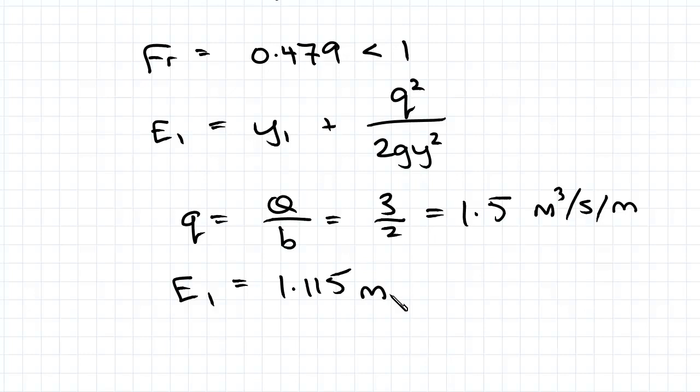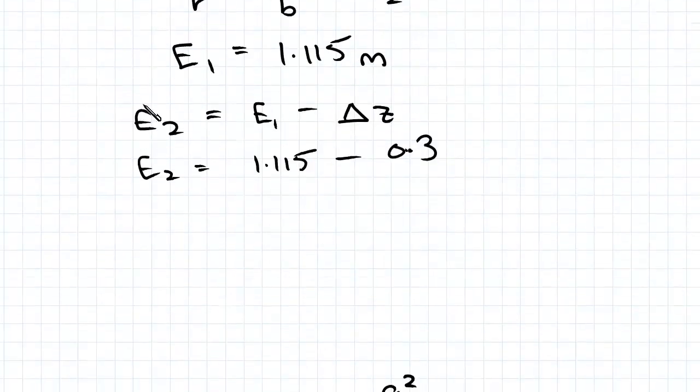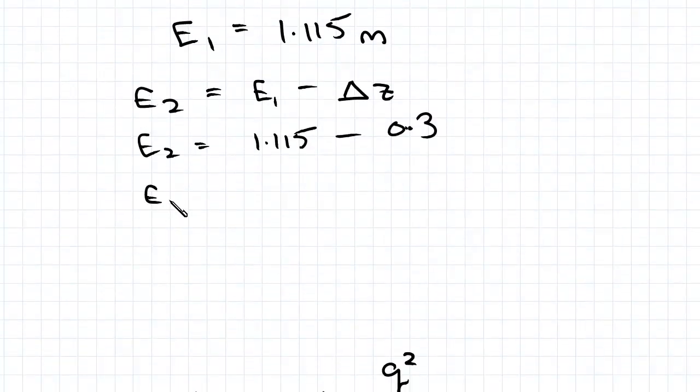Now we need to find e2 and this is where things change because we've got a new value for delta z. Now e2 using Bernoulli's equation is e1 minus delta z and our e1 was 1.115, our delta z was 0.3 meters so 30 centimeters which gives us a value of 0.815 meters for our e2.